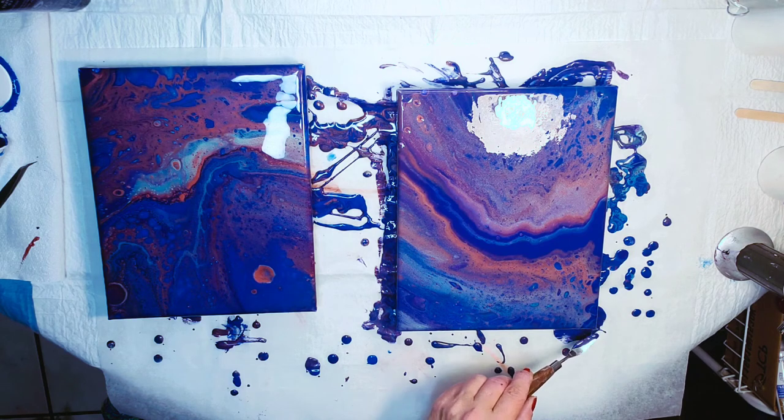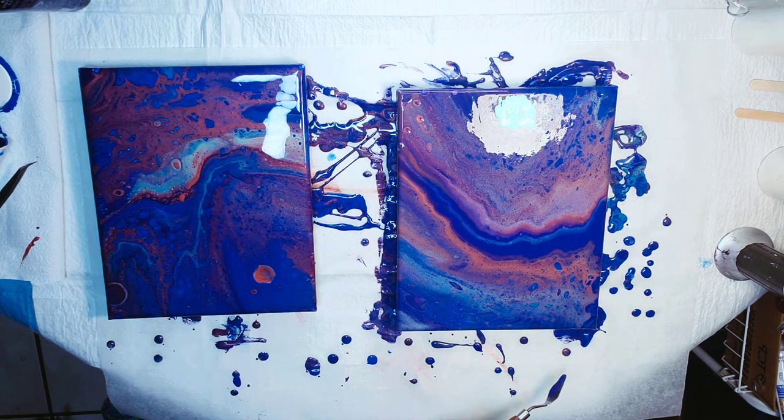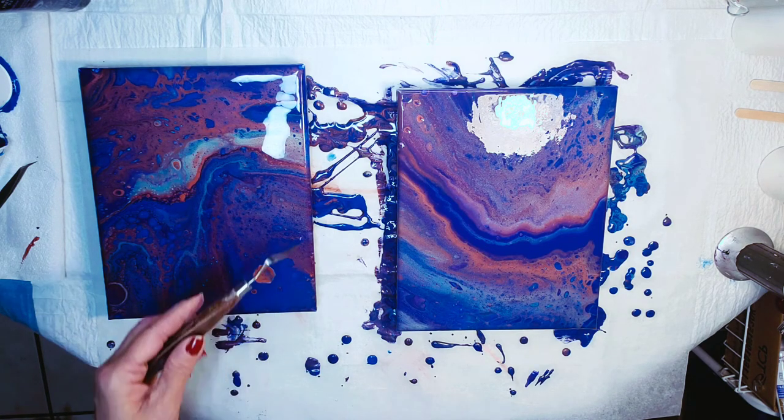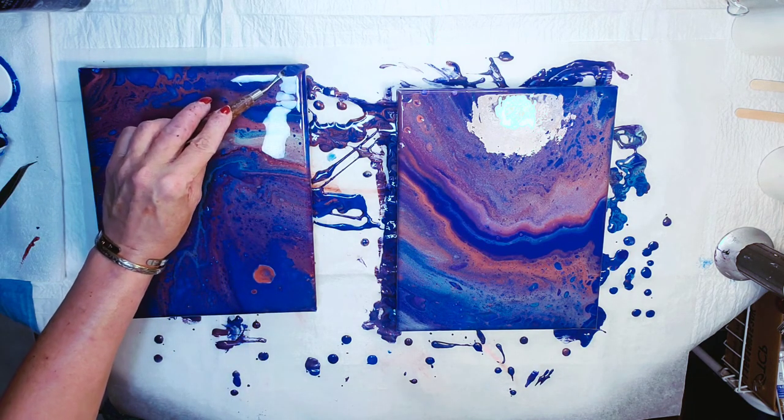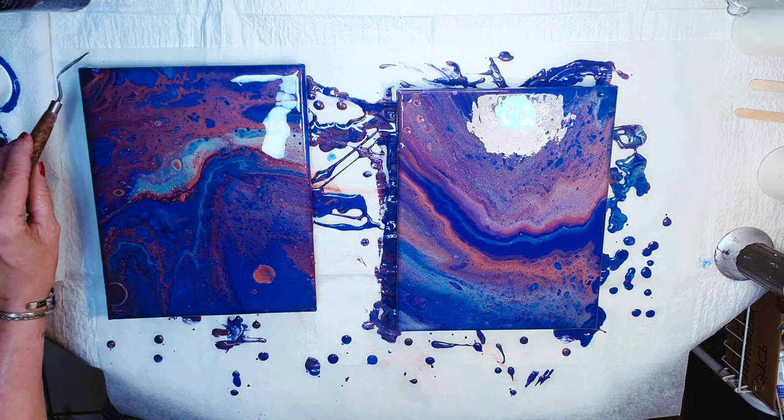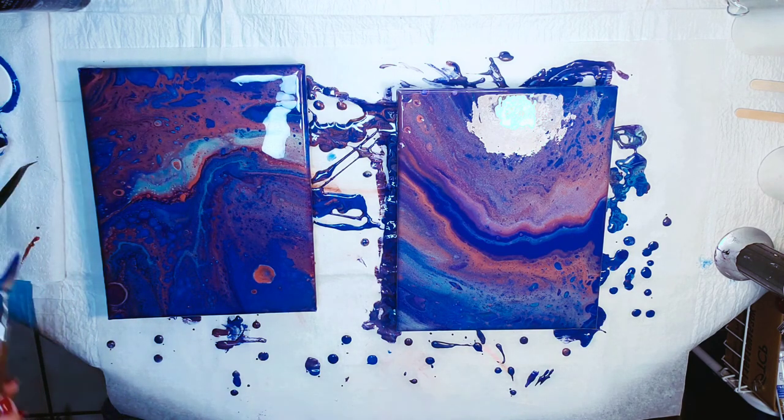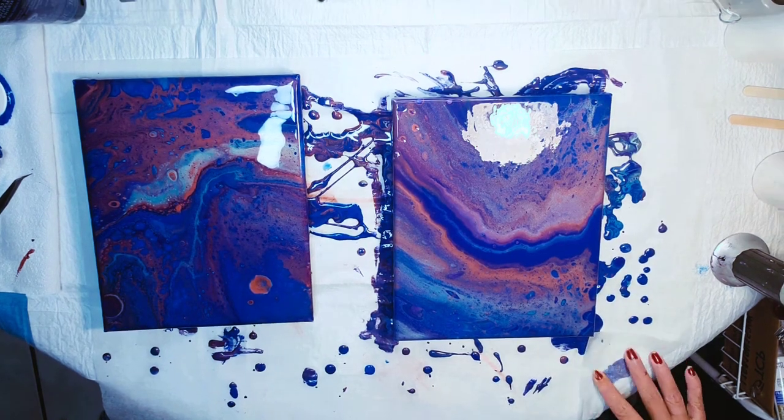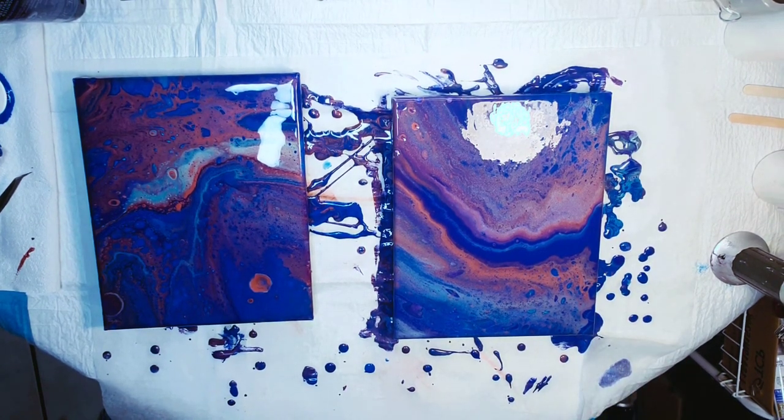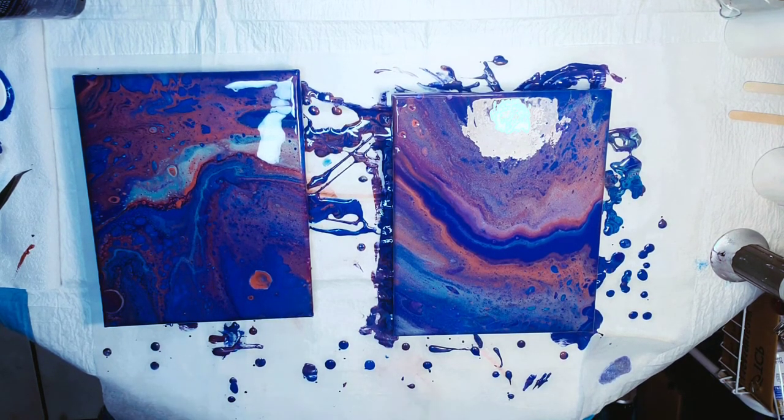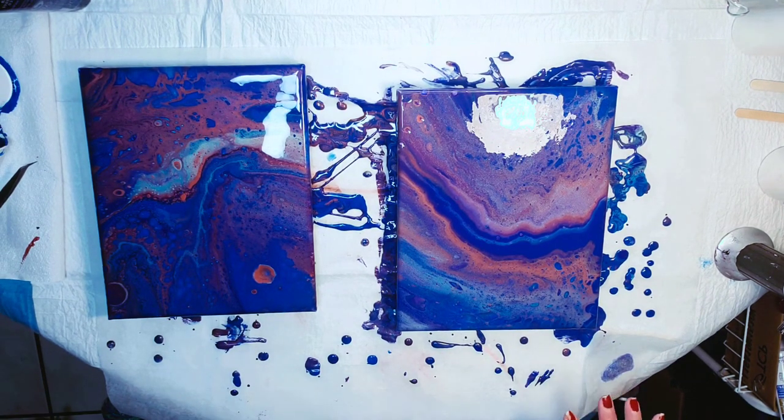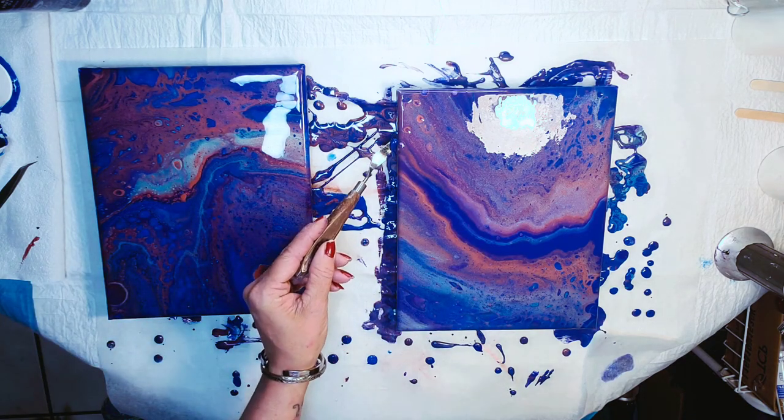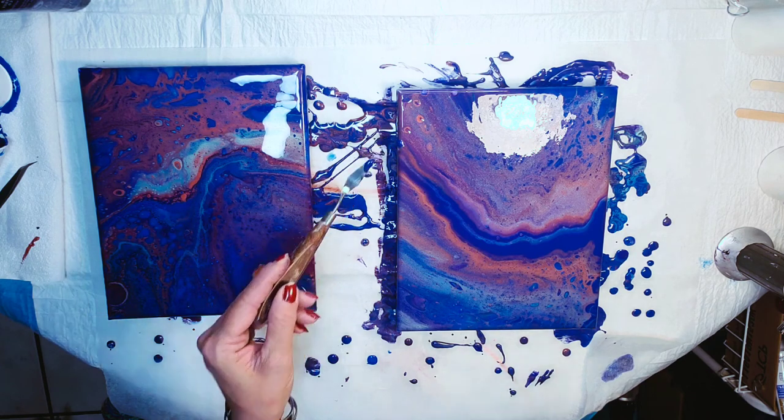I mean it's a little thin, so if you use like pouring medium instead of Floetrol, or if you used PVA in the mica powder. I wouldn't use just straight Floetrol is what I'm trying to say, because it's just too thin. But other than that, I like it.